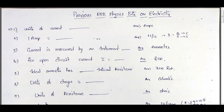First one: units of current. We know that units of current are amps, milliamps, or microamps. Second one: 1 amp equal to dash. We know that current I equal to Q by T. Q is charge, units of charge are coulombs, and units of time are seconds. So 1 amp equal to 1 coulomb per 1 second.